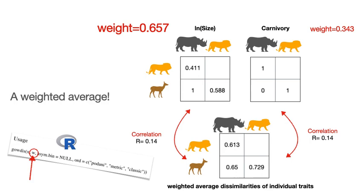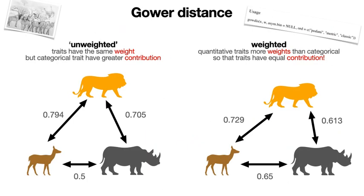We can now compare the results using an unweighted average of trait dissimilarities with a weighted one. We can see that in the weighted average, where we increase the weight of size compared to diet, the differences between the gazelle and the rhino are now greater — even greater than between the lion and the rhino. We do not discuss here which is the best solution, but in the weighted average case we have at least made sure that all traits considered have the same contribution to multi-trait dissimilarity.